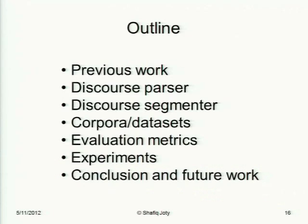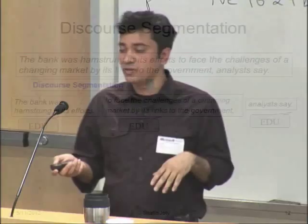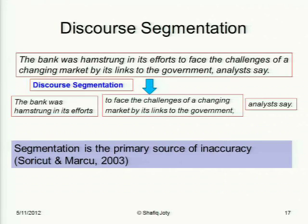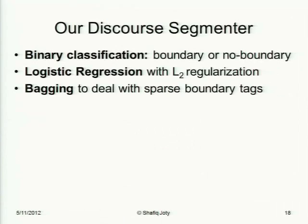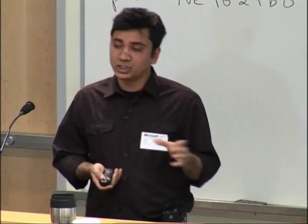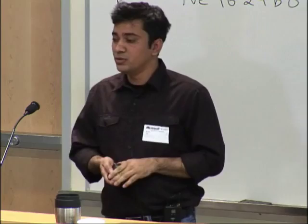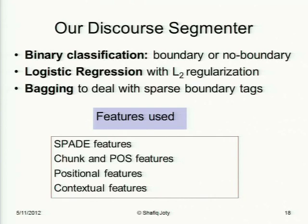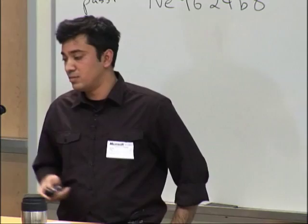Now let's see the discourse segmenter. The discourse segmentation problem is given a text to break it into a sequence of EDUs. Inaccuracies in discourse segmentation are the primary source of inaccuracy in the discourse analysis pipeline. We frame this as a binary classification problem: for each word except the last, decide whether there should be a boundary. We use a logistic regression classifier with L2 regularization, and a simple bagging technique to deal with sparse boundary tags. Features include SPADE features, chunk and POS features, positional features, and contextual features.